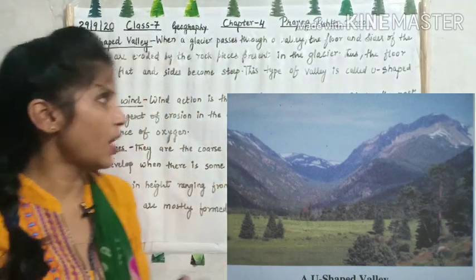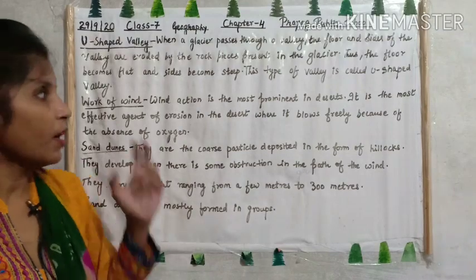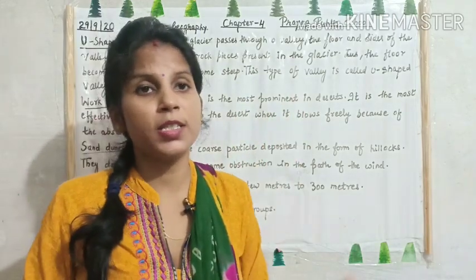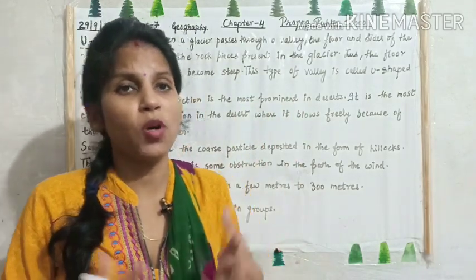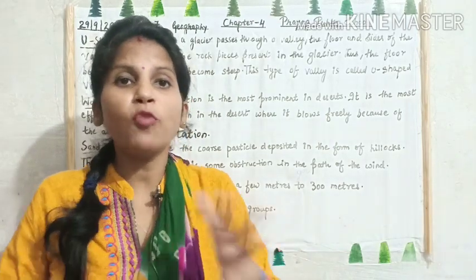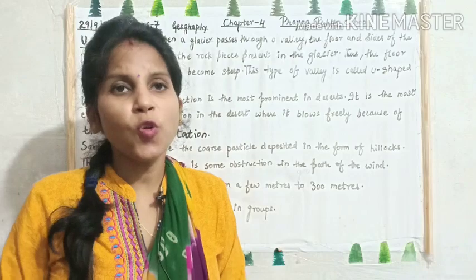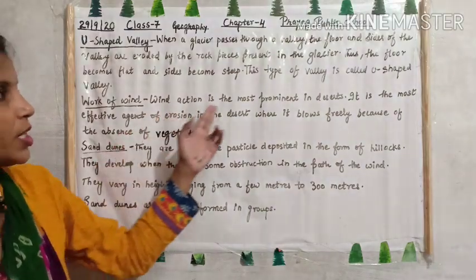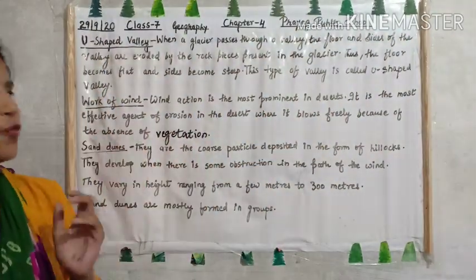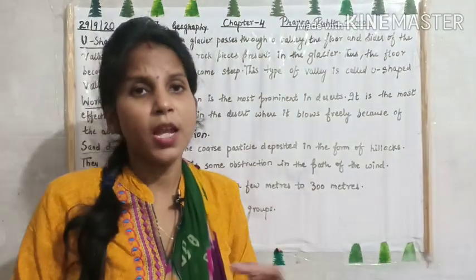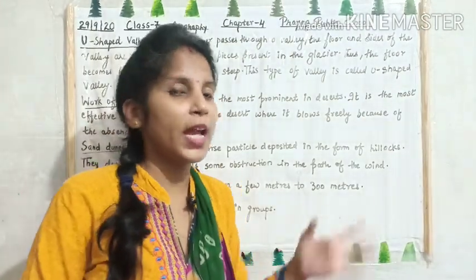Work of wind — wind is also an agent of erosion. Wind action is most prominent in deserts because there is an absence of vegetation. In desert areas, wind blows very freely because there are no plants, so there is no hindrance. It can flow easily and cause erosion. Wind erosion is most effective in the desert where it blows freely because of the absence of vegetation and very less plant life.